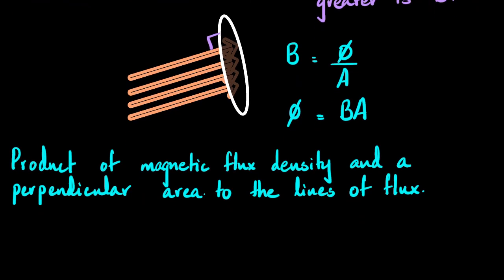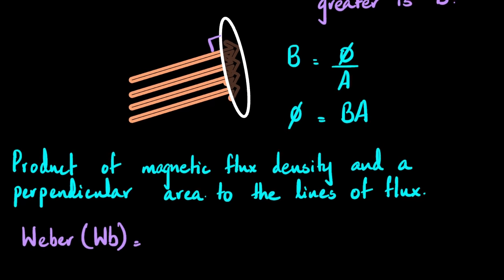The unit for magnetic flux is called the Weber, abbreviated as Wb (uppercase W, lowercase b). From the formula, one Weber equals one Tesla multiplied by one metre squared, so the unit of Weber is equal to one Tesla metre squared: 1 Wb = 1 T·m².